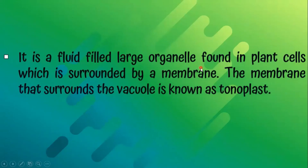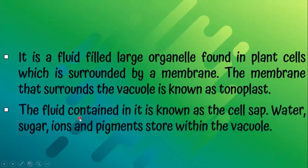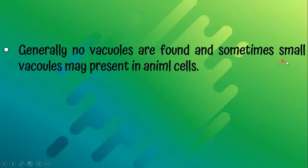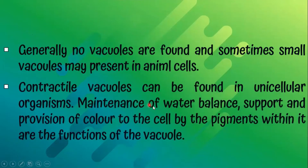The vacuole is a fluid-filled large organelle found in plant cells, surrounded by a membrane. The membrane that surrounds the vacuole is known as the tonoplast, and the fluid contained in it is known as the cell sap. Water, sugar, ions, and pigments are stored within the vacuole. Generally no vacuoles are found in animal cells, though sometimes small vacuoles may be present. Contractile vacuoles can be found in unicellular organisms. The functions of the vacuole are maintenance of water balance, support, and provision of color to the cell by the pigments within it.